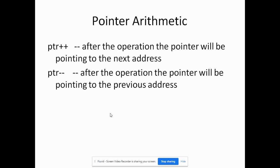Let's first discuss pointer arithmetic. We can use the increment operator to add to a pointer: ptr++ moves the pointer to the next address. The next address is not necessarily one byte away — it depends on the size of the variable the pointer is pointing to. For an integer pointer, since an integer is typically four bytes, if the first address is 1000, the next address is 1004, then 1008, and so on — four bytes are added each time. We can also use ptr--, which moves the pointer to the previous address, again depending on the data type size.